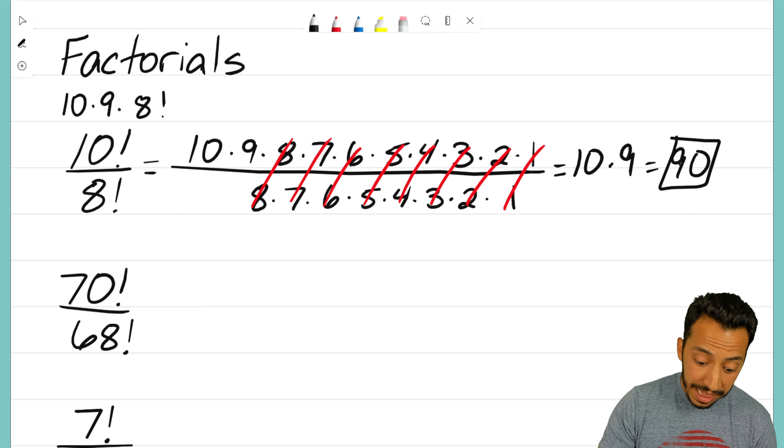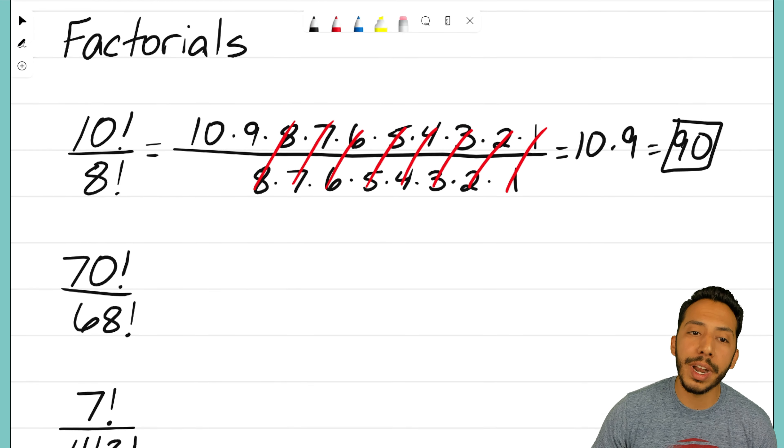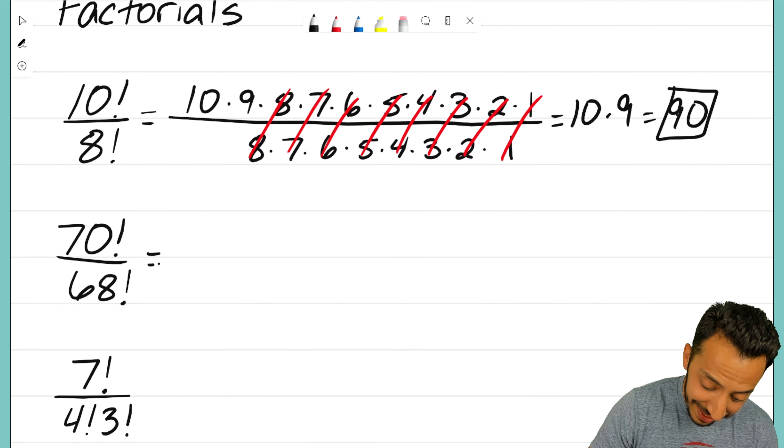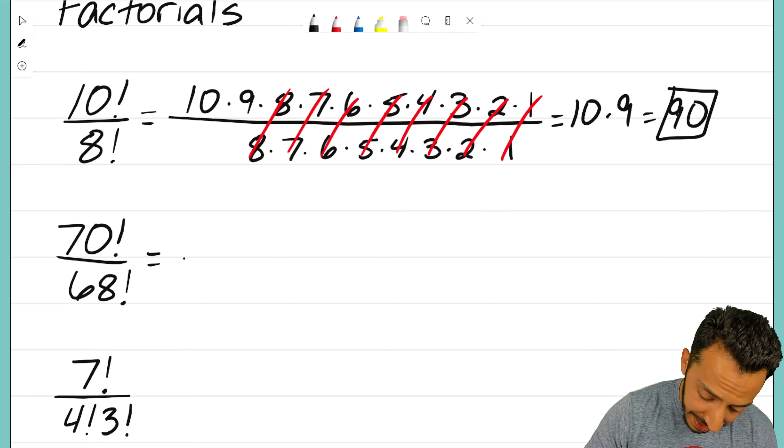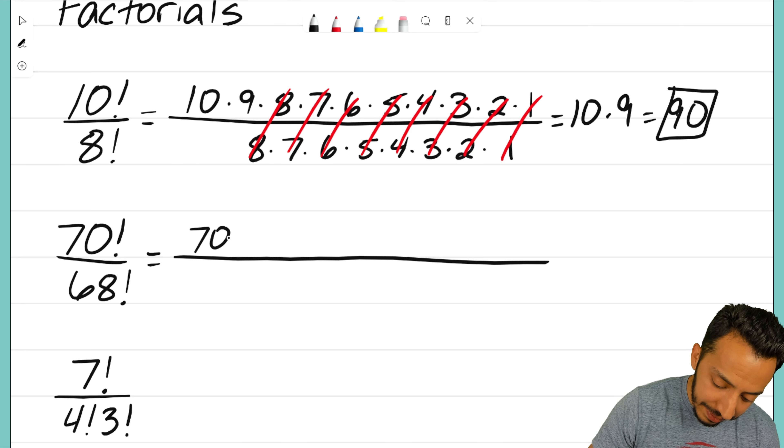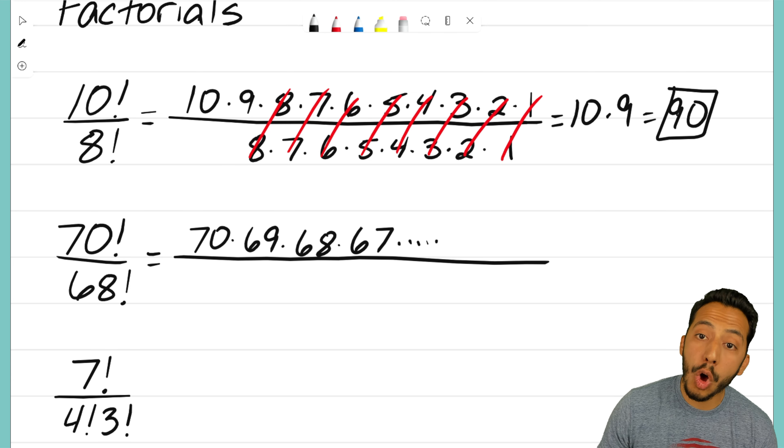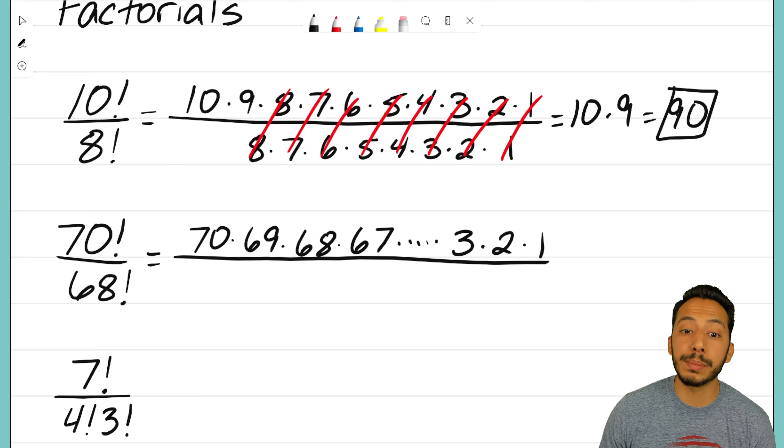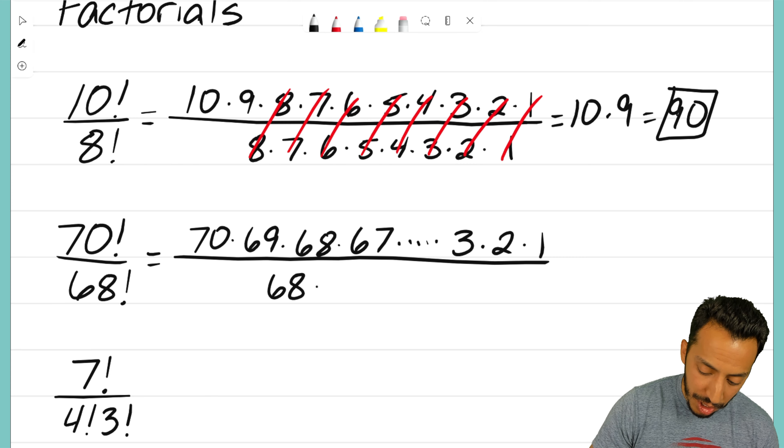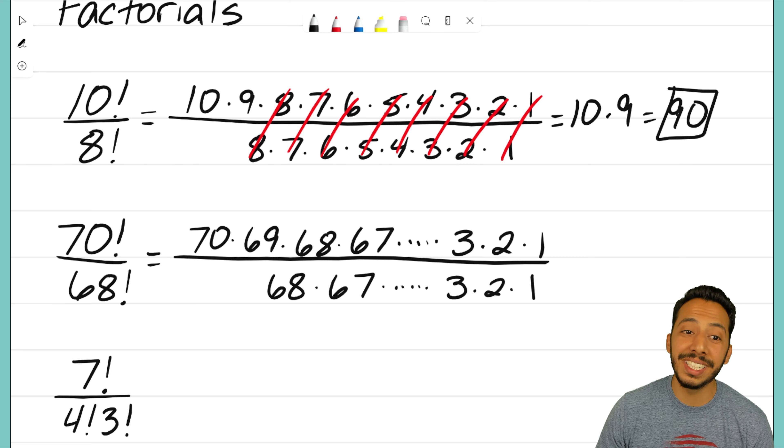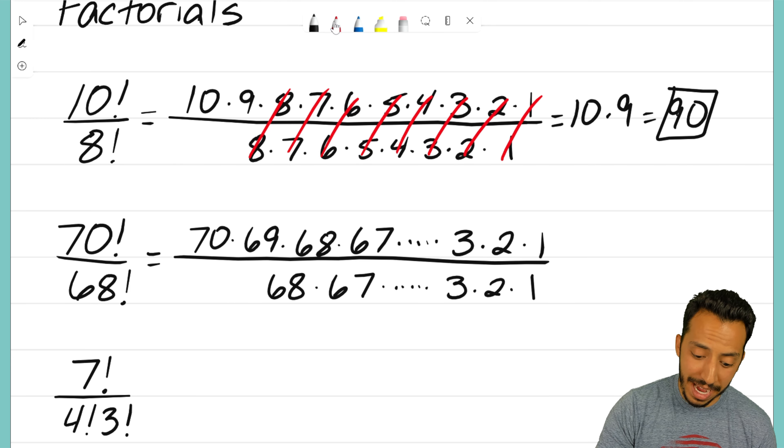Let's see how we can use this in another problem—this bottom one. I do not want us to write this all out because that's going to be insane. Think about this fraction—on top we'd have 70 times 69 times 68 times 67 all the way until we end up at 3 times 2 times 1. That's going to be intense. On the bottom we have 68 factorial, so I could start with 68 times 67 all the way down to 3 times 2 times 1.